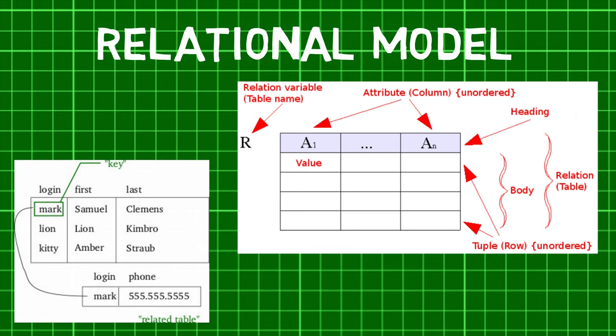A finite set of tuples in the relational database system represents a relational instance. Relation instances do not have duplicate tuples. A relation schema describes a relation name — that is, the table's name — and attributes and their names. Each row has one or more attributes, known as a relation key, which can identify the row in the relationship uniquely, and every attribute has some predefined value scope, known as attribute domain.